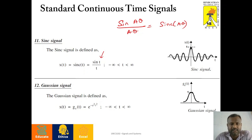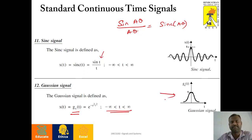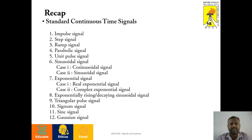Next is the Gaussian signal. The Gaussian signal is defined as x of t equals g-A of t equals e to the power of minus a squared t squared, over the range from minus infinity to plus infinity, and it is a bell-shaped signal. So, these are the standard signals, otherwise called as elementary signals. In this presentation, we had 12 different standard continuous time signals.